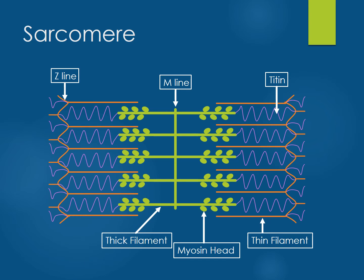This is the basic structure of a resting sarcomere. Thick filaments are centrally located and colored green in the graphic. Thin filaments are colored orange and located on each side of the thick filaments. Titin is the thin spring-like structure, colored purple.